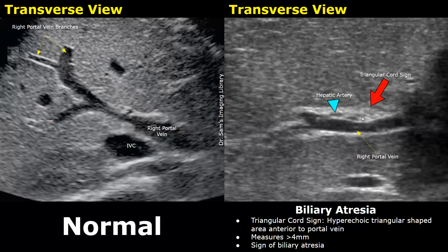This is how the triangular cord sign looks: there is a thickened triangular-shaped hyperechoic area anterior to the right portal vein. You can see a hyperechoic prominent area at this location. This area usually measures greater than four millimeters and is a sign of biliary atresia.